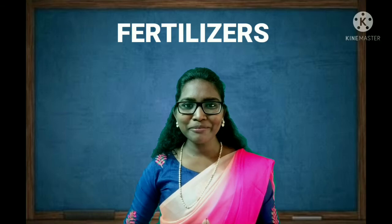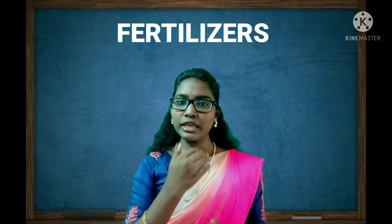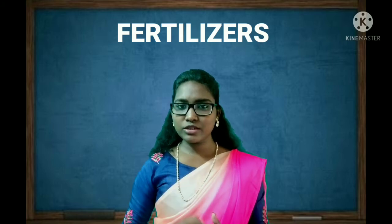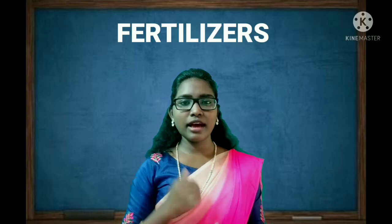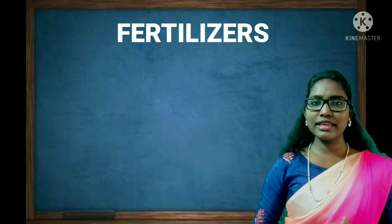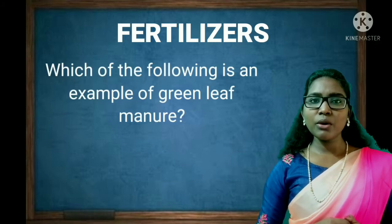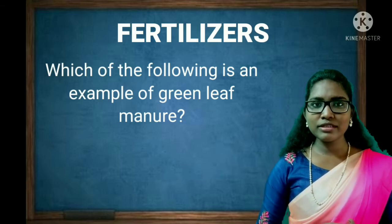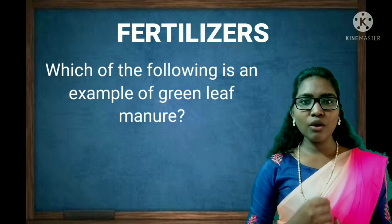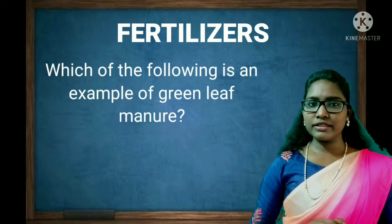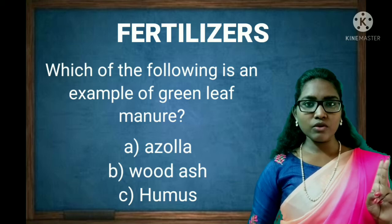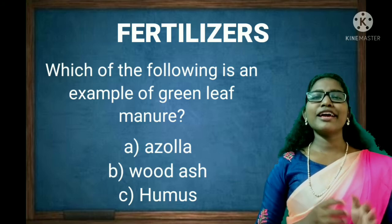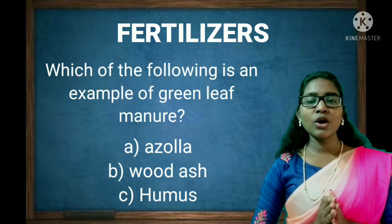Shall we start our quiz program? The first question goes to the team girls. I will ask the question and there will be three options for each question, so listen carefully and answer the correct one. The first question for girls is: which of the following is an example of green leaf manure? The correct answer is option A, Azolla.